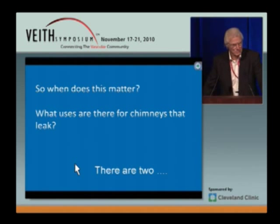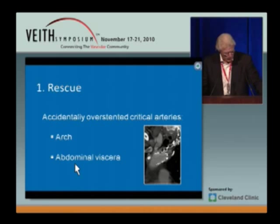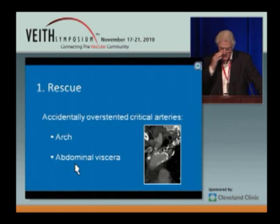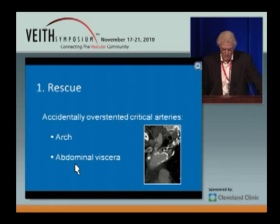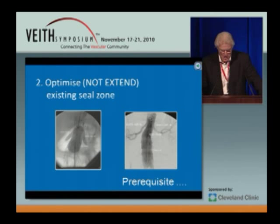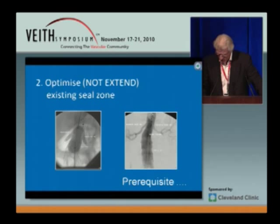Well, there are two. I will concede that there are two roles for chimneys. First, as a rescue procedure for accidentally overstented critical arteries, either in the arch or in the abdominal viscera. And secondly, to optimize but not to extend existing sealing zones, as for example in this case here.